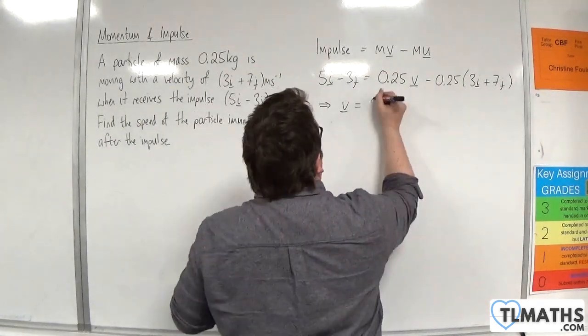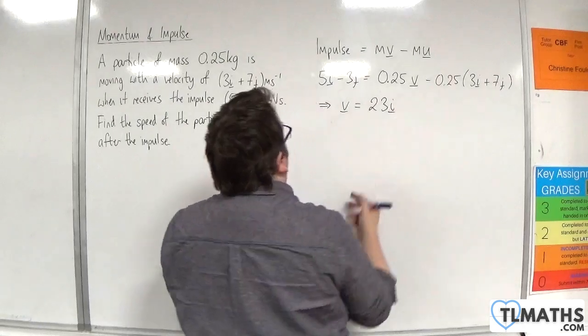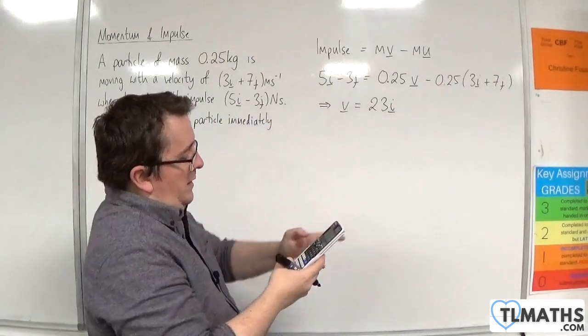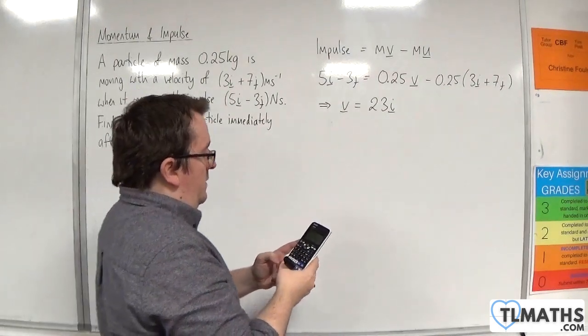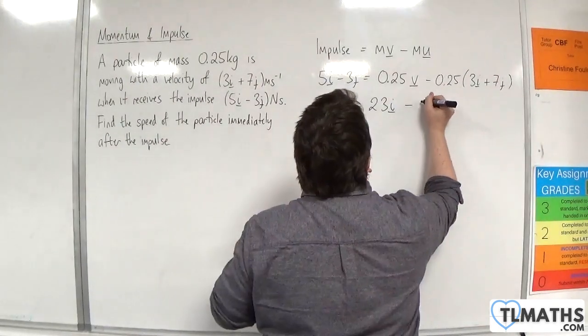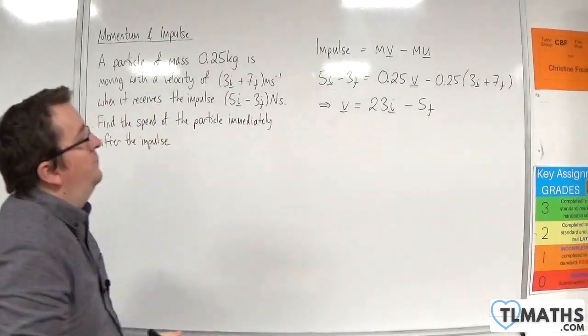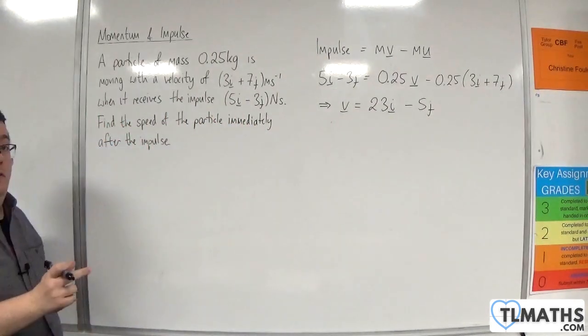We get 23i, then -3 + 0.25 times 7, and then divide it by 0.25. So that's -5j meters per second. That is the final velocity.